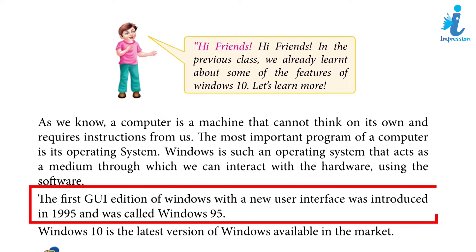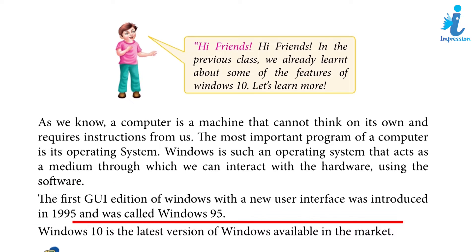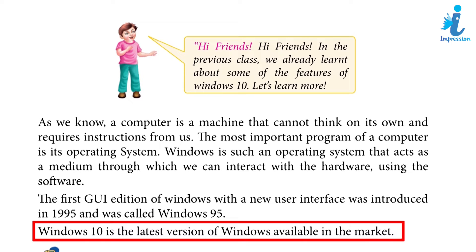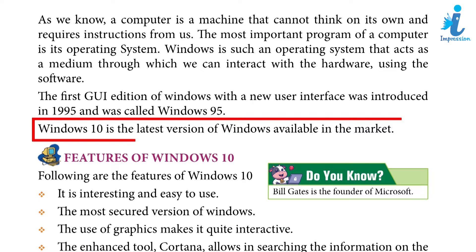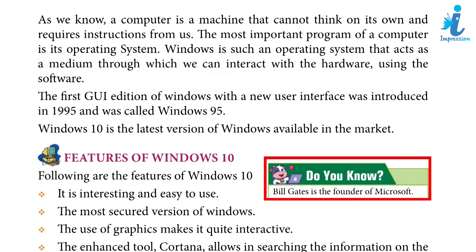The first GUI edition of Windows with a new user interface was introduced in 1995 and was called Windows 95. Windows 10 is the latest version of Windows available in the market. Did you know? Bill Gates is the founder of Microsoft.